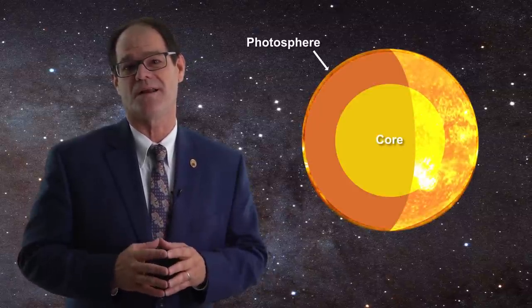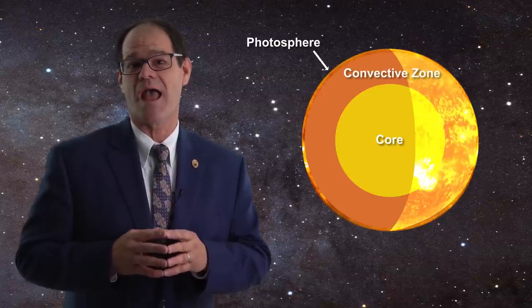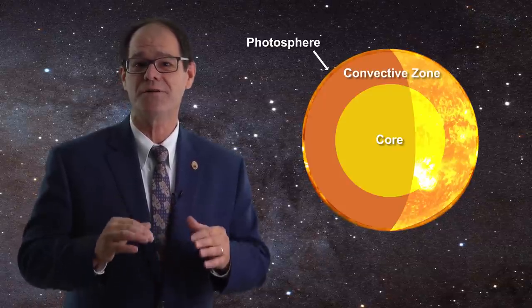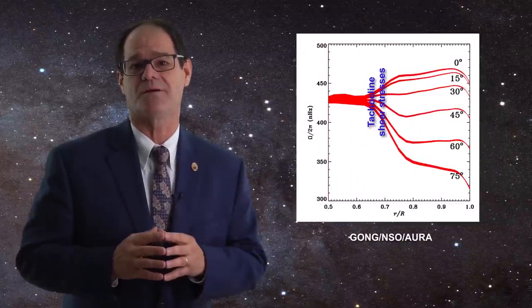Another proof relative to the condensed nature of the Sun can be found in the outer third of the solar body. This is a region characterized by the convective zone and an associated inferiorly located tachocline layer. Powerful shear stresses are associated with the tachocline layer.